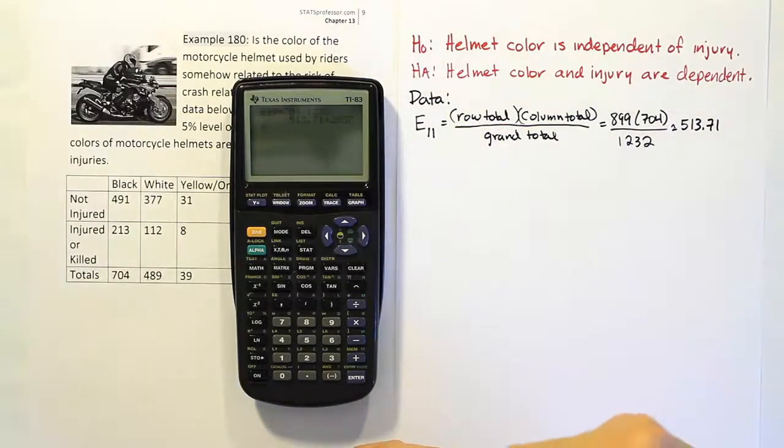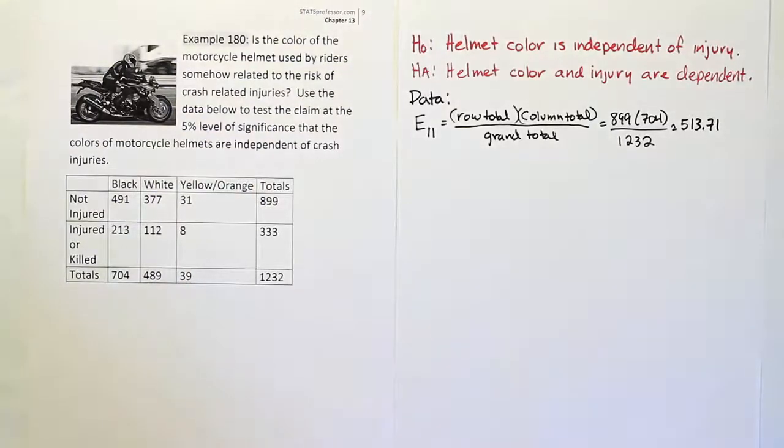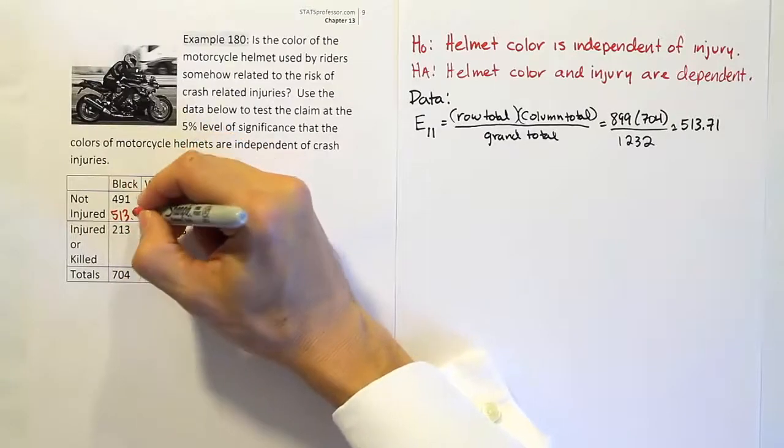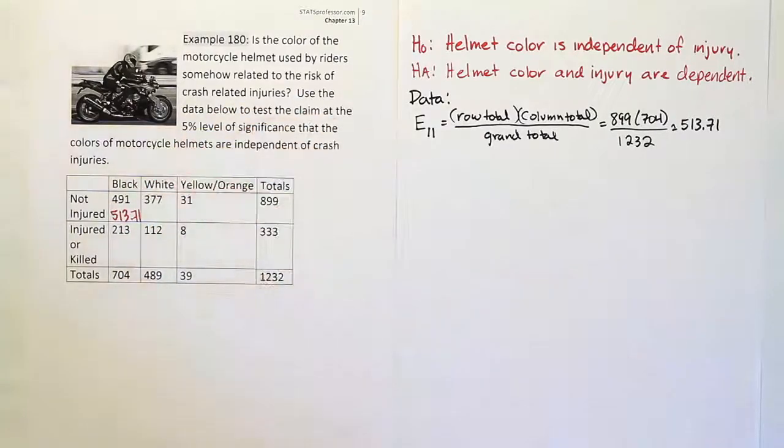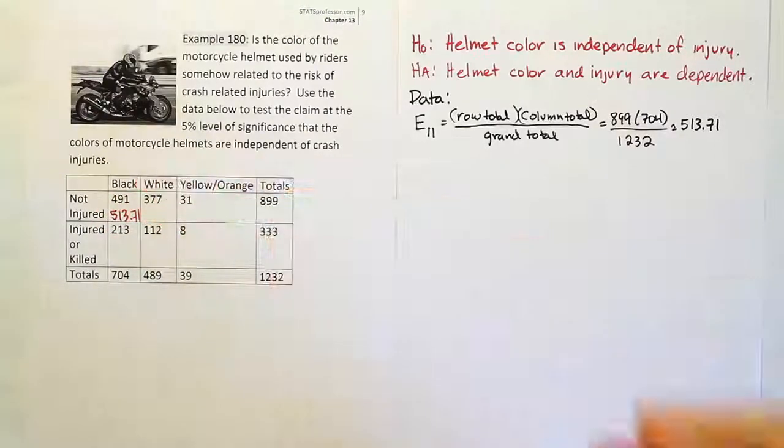Let's put that number in our table now where it belongs. It will be 513.71. I've penciled it in underneath the position of the observed value so we can see it for later.